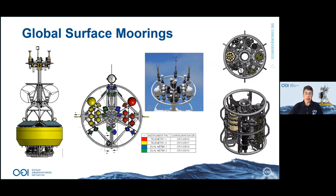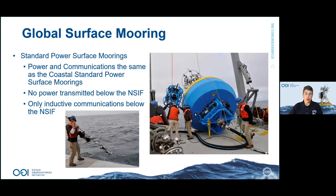Images show the buoy halo with all meteorological and telemetry components, drawings of the near-surface instrument frame, the surface buoy just before deployment with the long chain connecting it to the NSIF, and a number of instruments mounted directly onto the wire as the mooring is deployed. Power is transmitted only down to the NSIF; everything below is battery-powered with inductive communications.